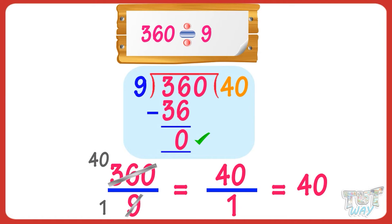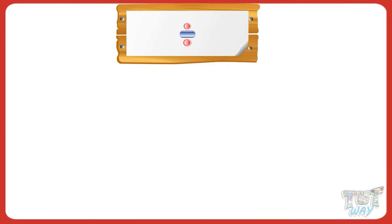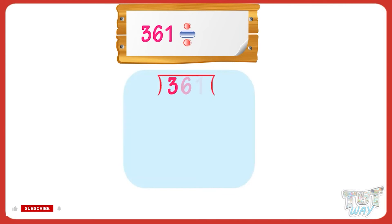So kids, whenever the number left in the dividend is only 0 or 0s, we can just append them to the quotient. Now, let's learn more on division. Now, we have to divide 361 by 4.